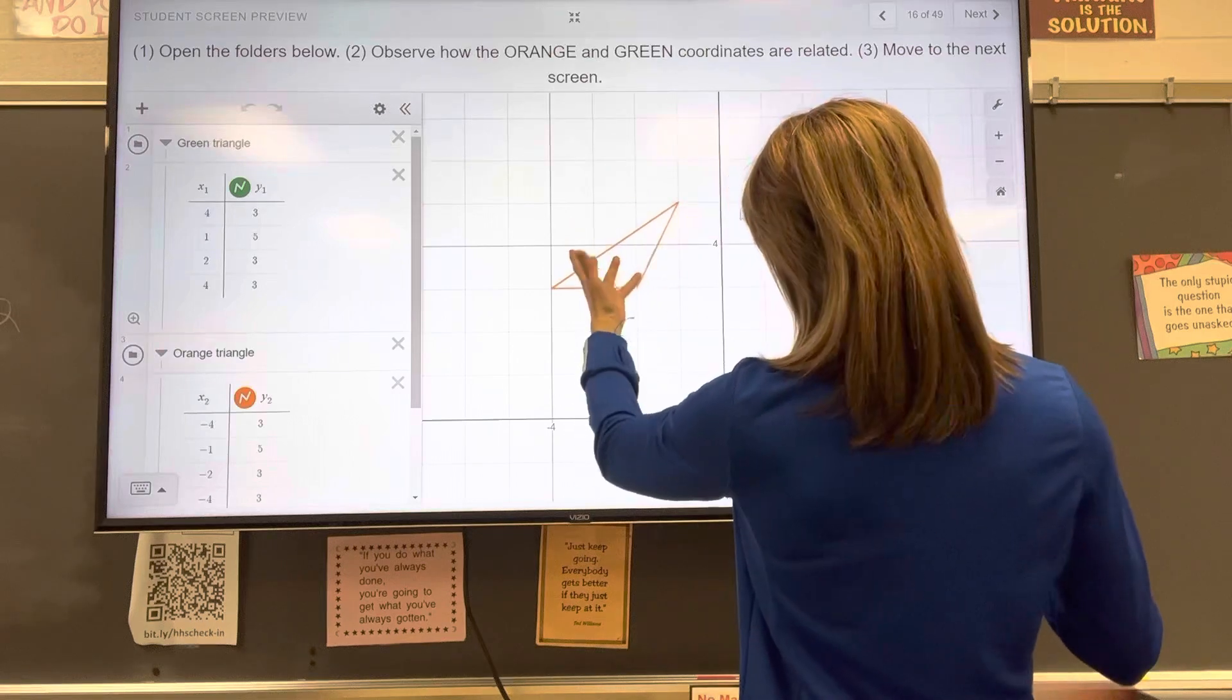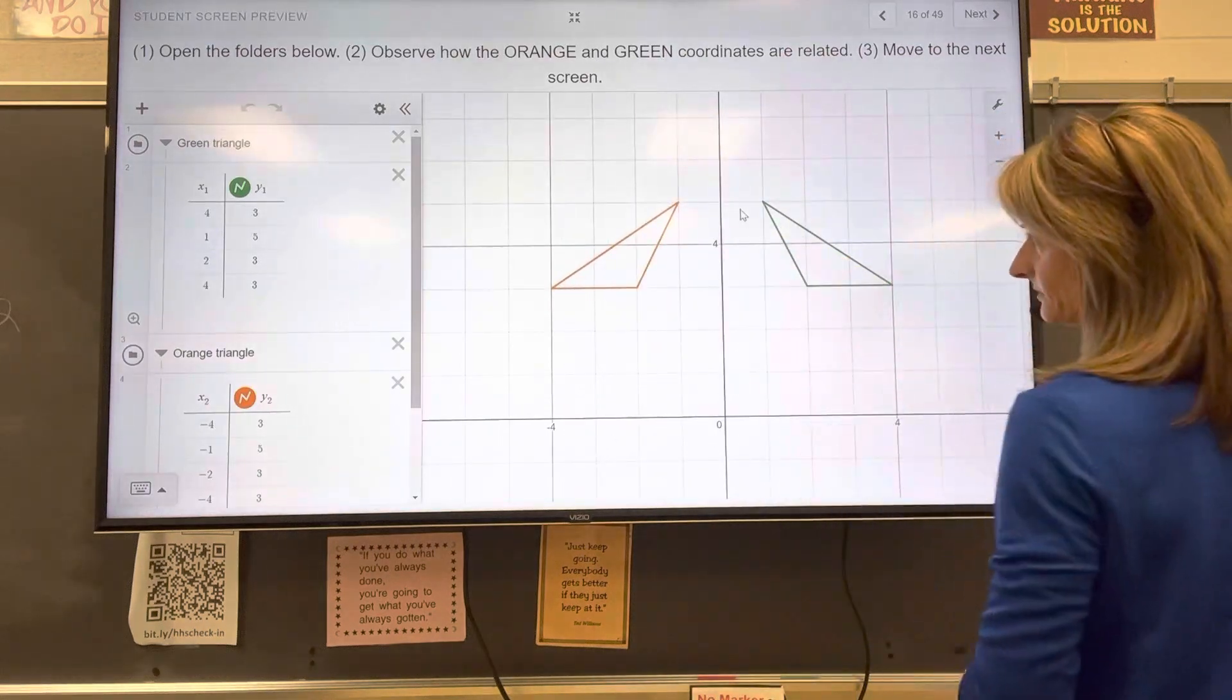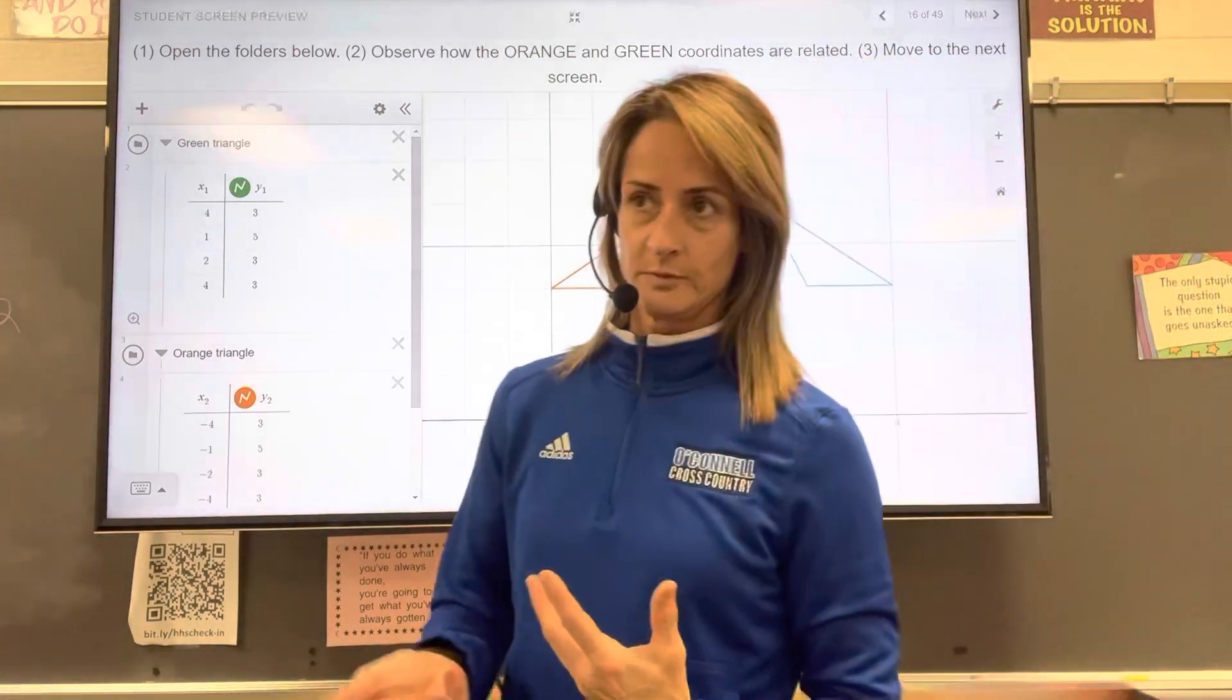That would be the pre-image and you'd be reflecting it to the green image and that would be the image. So the pre-image, pre is before. It's the first one.